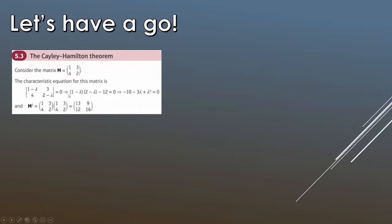Multiplying out and simplifying gives us lambda squared minus 3 lambda minus 10 equals zero. They've also pre-computed M squared — the matrix M times M — which equals the matrix [13, 9; 12, 16]. If you don't have one already, I'd strongly recommend getting a graphical calculator with matrix functionality; you're allowed to use them and they'll save a lot of time.